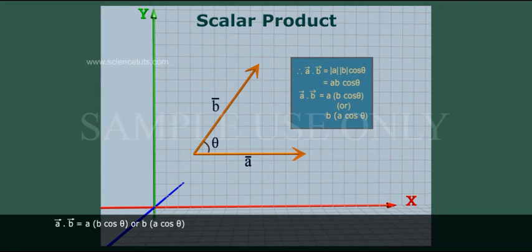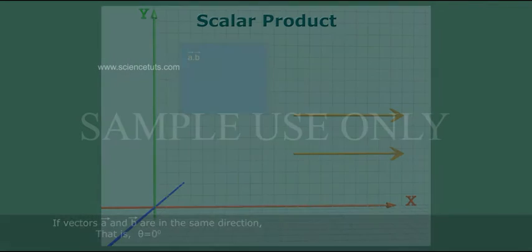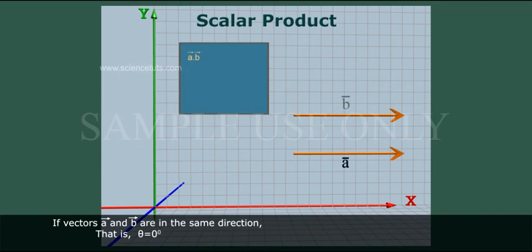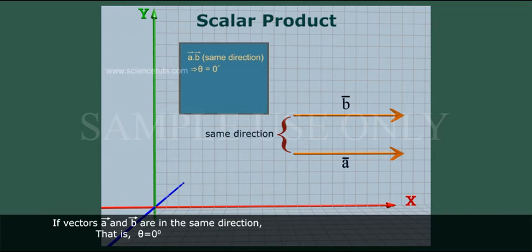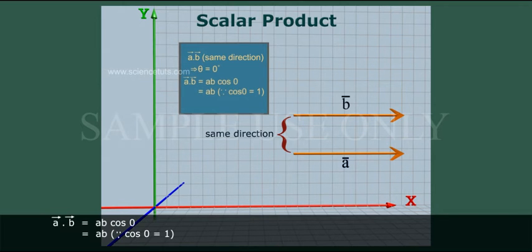A bar dot B bar is equal to A into B cos theta, or B into A cos theta. If vectors A bar and B bar are in the same direction, that is, theta is equal to zero degrees, then A bar dot B bar is equal to AB cos zero, which is equal to AB, since cos zero is equal to one.